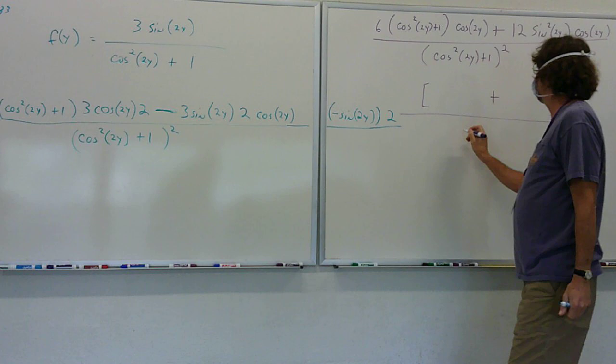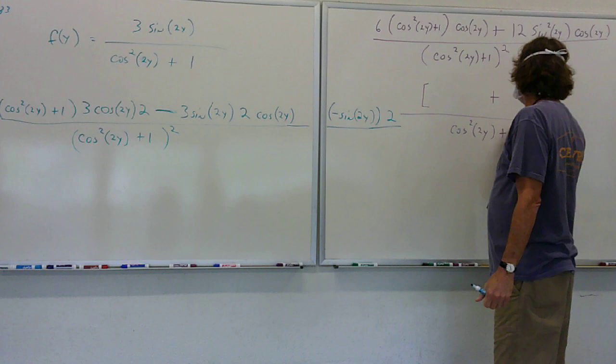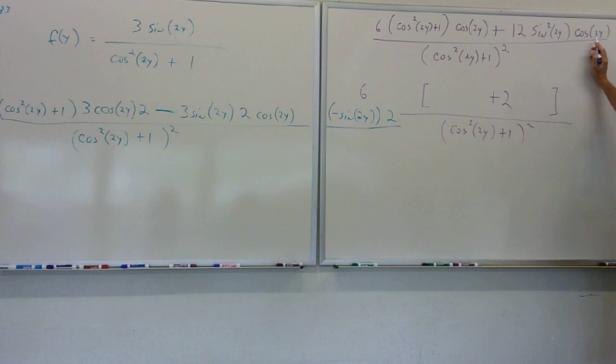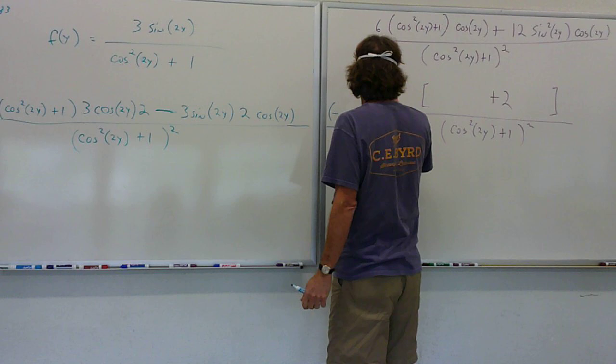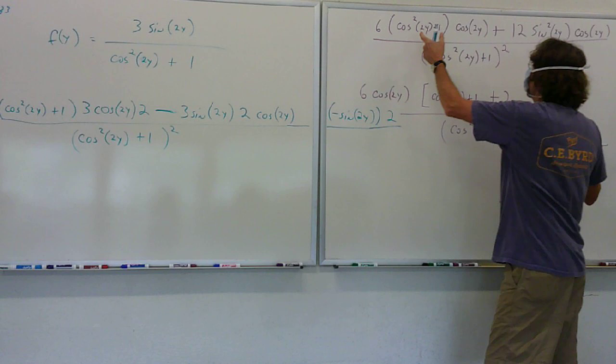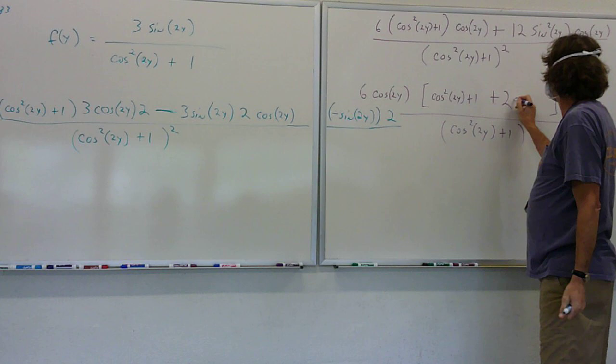I'm going to write a few different colors of ink here. Cosine squared 2y plus 1, all in parentheses squared. Let's just take out the 6. That leaves a 2. And then we're going to factor out cosine 2y. That leaves cosine squared 2y plus 1, and then it leaves a sine squared 2y here on the end.